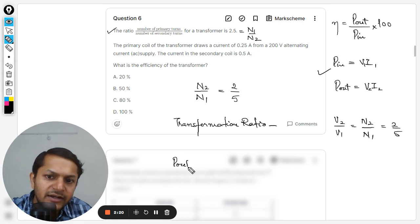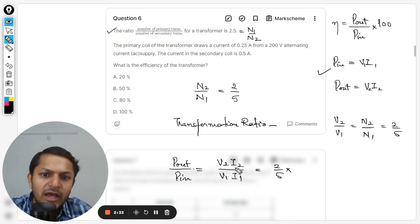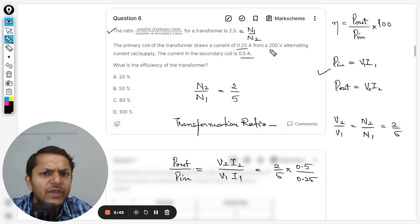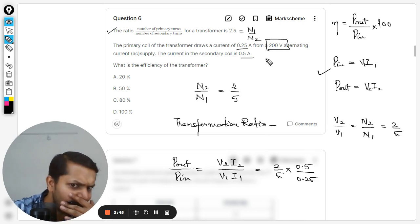Now here we want to find this ratio. Let me write it as P out divided by P in, and this will be equal to v2 i2 divided by v1 i1. So v2 by v1 is 2 by 5, i2 the secondary current is 0.5, and the primary current is given as 0.25.